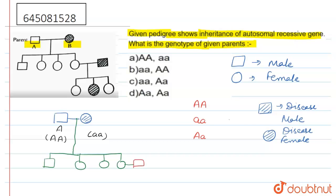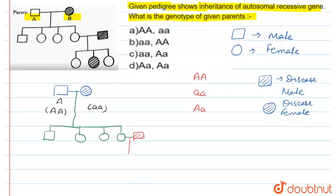After that, this female marries one male, and this male is having the disease. The disease is then transferred to their offspring — the first is a daughter, the second is also a daughter, and the third is also a daughter. But only one daughter is having the disease. So we can say this is a type of autosomal recessive disease, because it is based on autosomes.